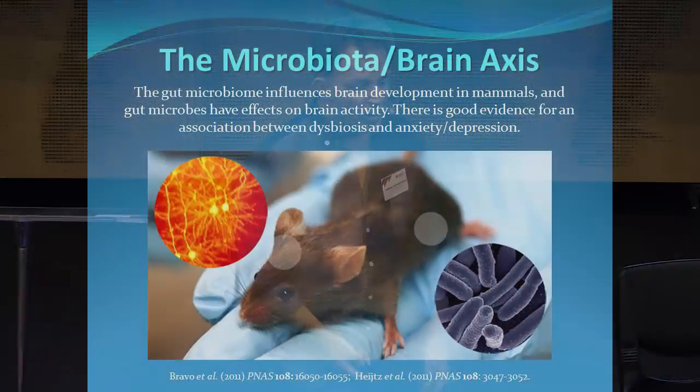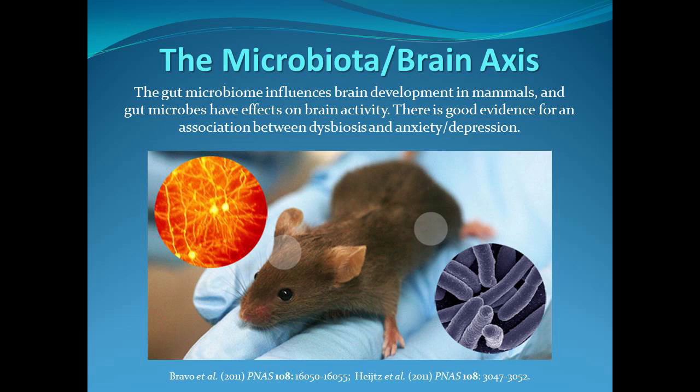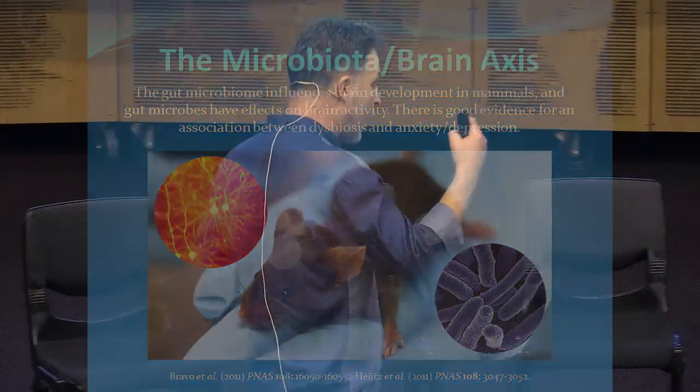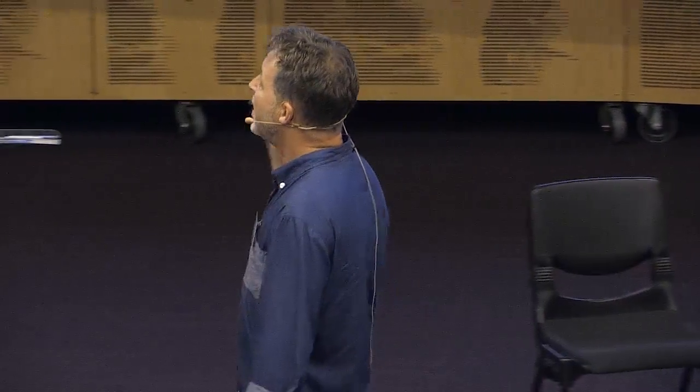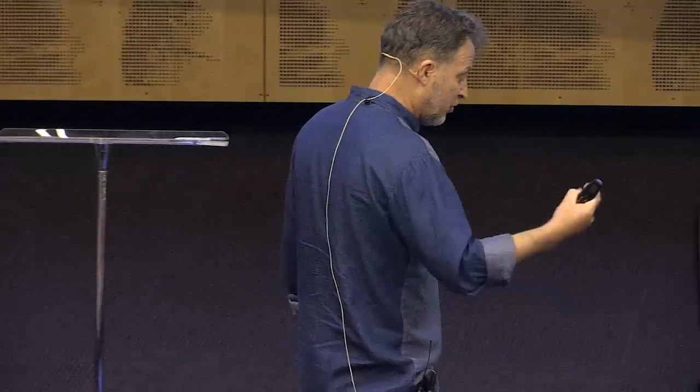All of this is complex and not fully understood, but from mouse models where you can manipulate gut contents and observe behaviour, you can ramp up anxious-type behaviours. There is a strong association between the type of microorganisms you have in your gut and your propensity for anxiety and depression.